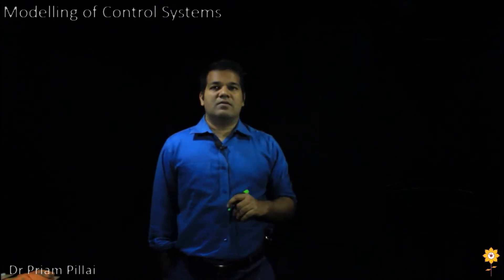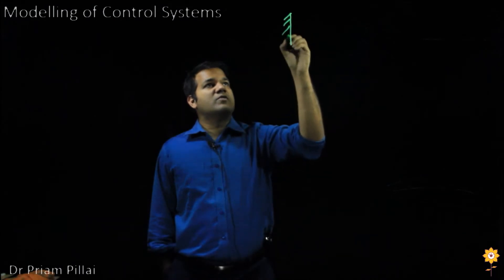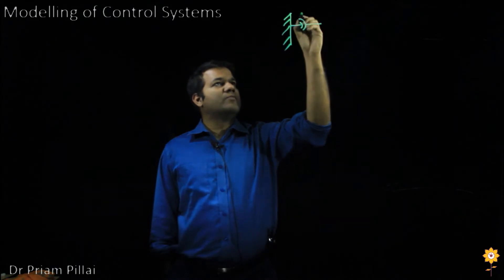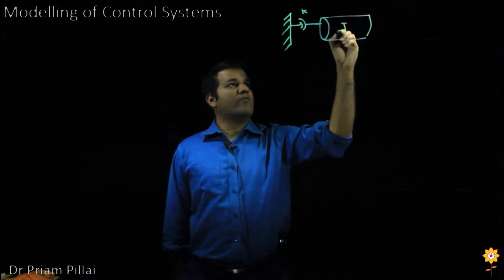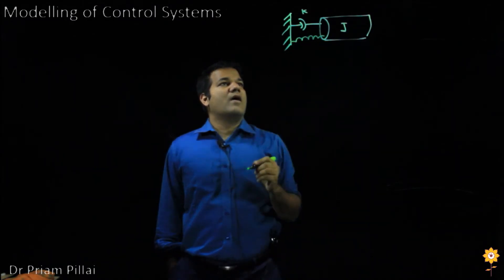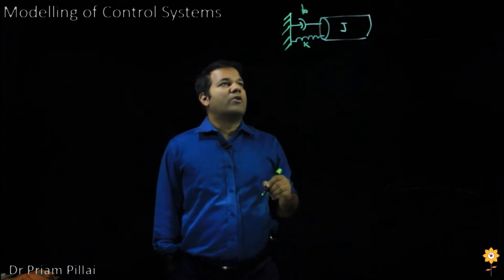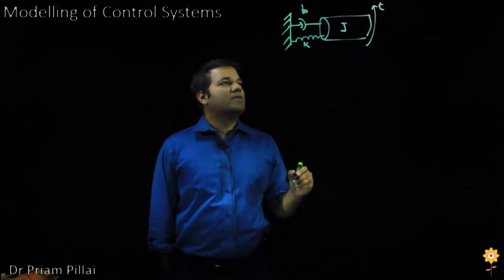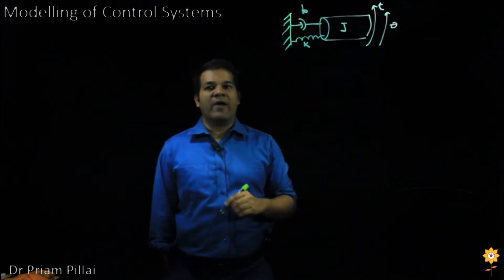Instead of a spring, mass, and damper, we have a rotational spring, a shaft of moment of inertia J, and a rotational damper. We apply a torque on this shaft and we measure its angle as we rotate it.